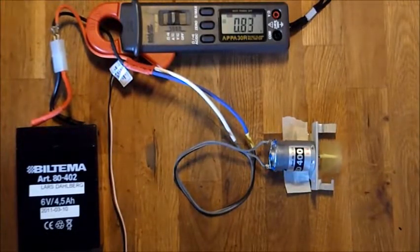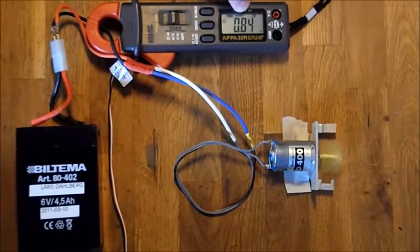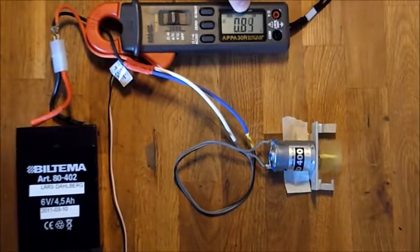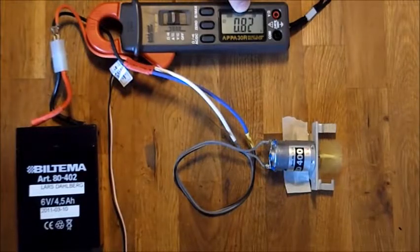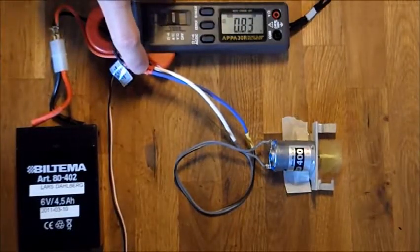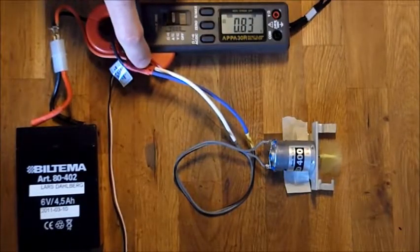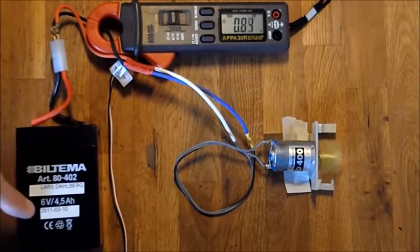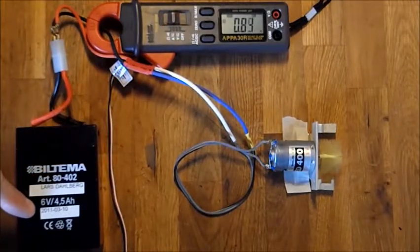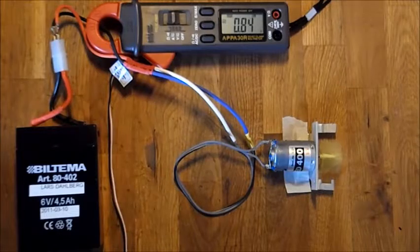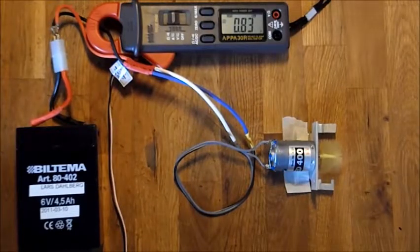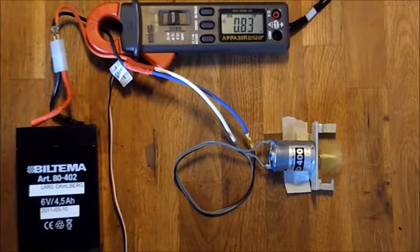One interesting thing about this is that when the electric motor is stalled the current consumption peaks. More current cannot be consumed by the motor. So if the stalled current is 8 amperes there is no need for an electric speed controller rated at 100 amperes.